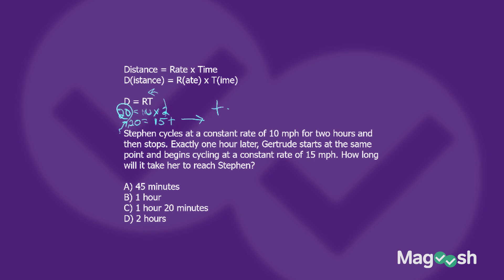Solving for T: T equals 20 over 15, which equals 4 over 3, the same as 1 and 1/3 hours. One-third of an hour is 20 minutes, so the answer is 1 hour and 20 minutes. Even without converting the fraction, you can look at the answer choices: 4/3 is greater than 1 but less than 2, and the only answer that fits is answer choice C.